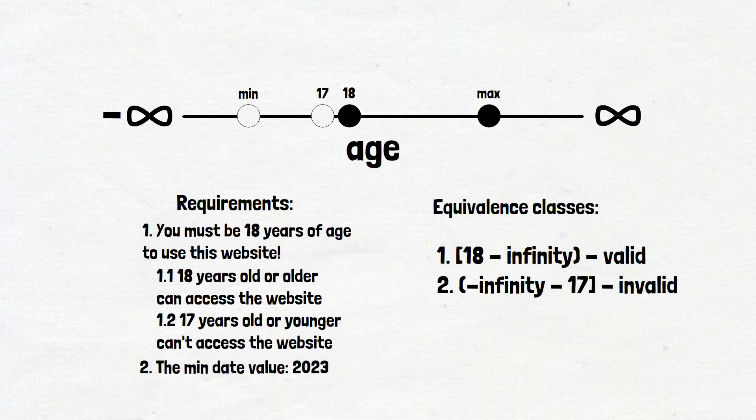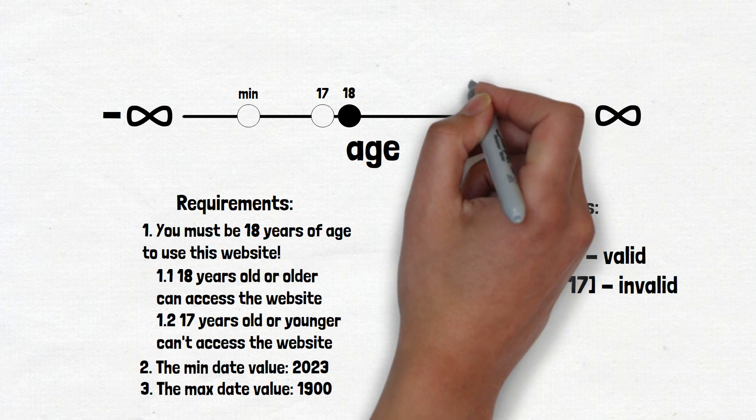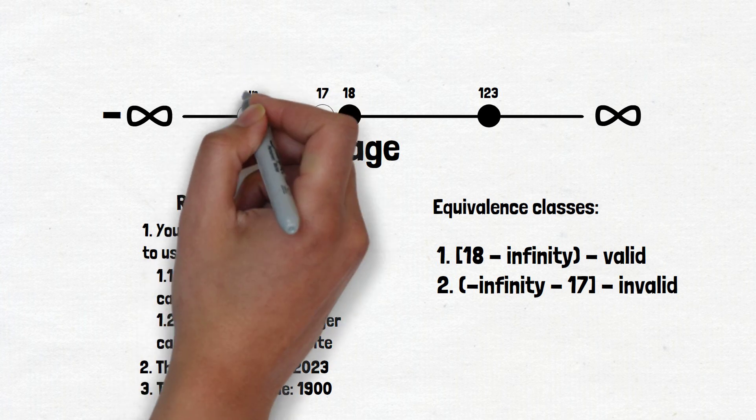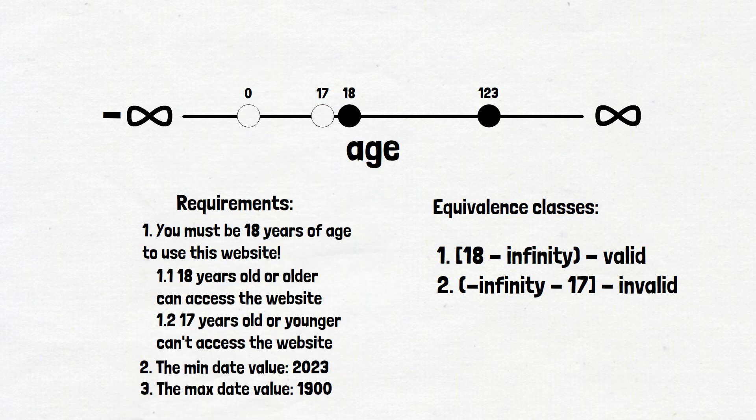First of all, let's write down the requirements. The min date value is 2023. The max date value is 1900. All these were found by the system usage. On the real project, we suggest to talk with the responsible person like the product owner. But not in this example. We'll take what we can see as the requirements and put these two values on the age line. Min value is 0. Max value is 123.